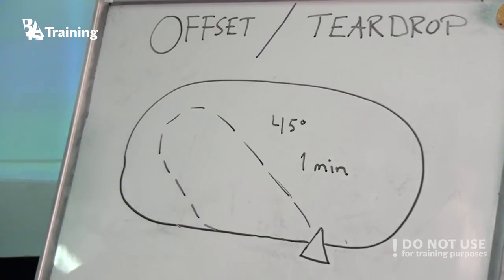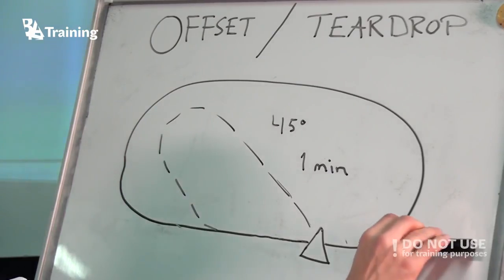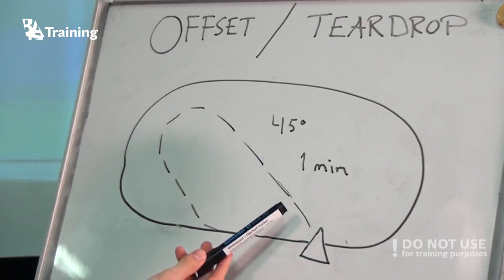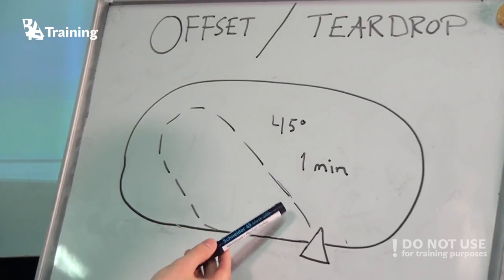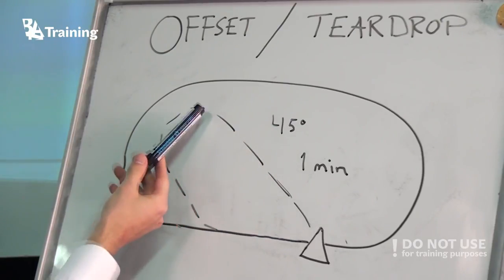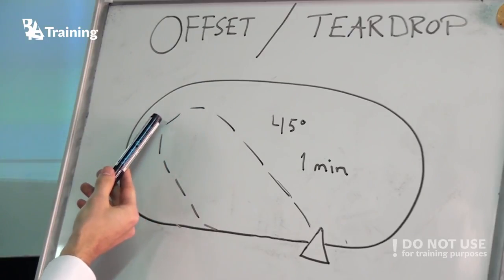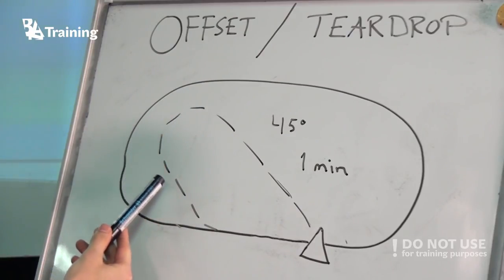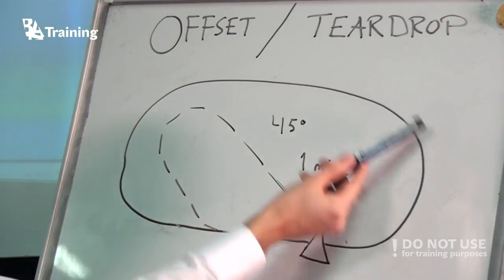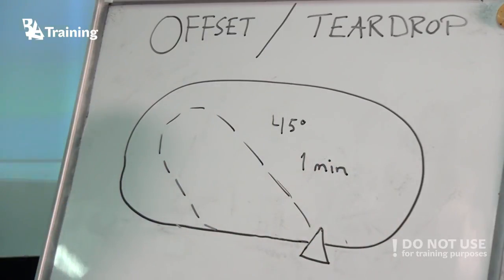If you have decided that offset or teardrop is the entry to use, you will come from this direction. You proceed to the fix and then you should turn 45 degrees from the outbound leg, proceed for one minute, then start the turn and intercept the inbound leg. Then you can continue with the rest of the holding.